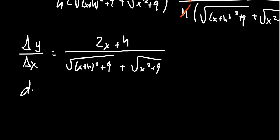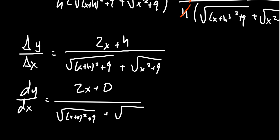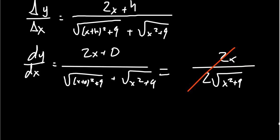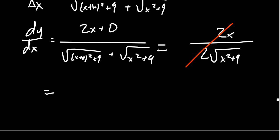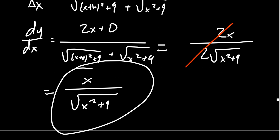But then if we want the instantaneous rate of change, we set h equal to 0. This is going to give us 2x plus 0 above the square root of x plus 0 squared plus 9 plus the square root of x squared plus 9. The numerator simplifies just to be 2x. But the denominator, you get the square root of x squared plus 9 twice, so you actually get 2 times the square root of x squared plus 9, for which the 2s cancel out. In the end, we end up with x over the square root of x squared plus 9. And that then gives us this derivative, the instantaneous rate of change.